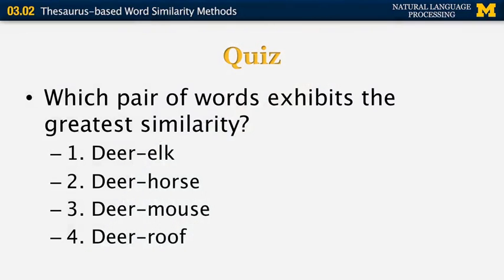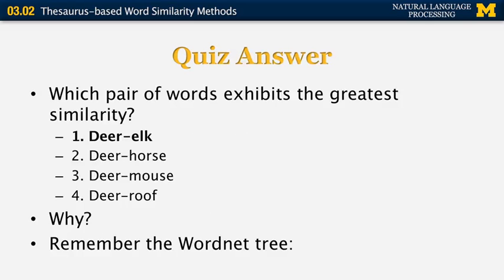Look at the four pairs of words shown here and tell me which pair exhibits the greatest similarity. The answer should be pretty obvious if you know what elk means. Deer and elk are the most similar pair. Why are they most similar? Well, you know that they're both kinds of deer — but how does a natural language system know that?